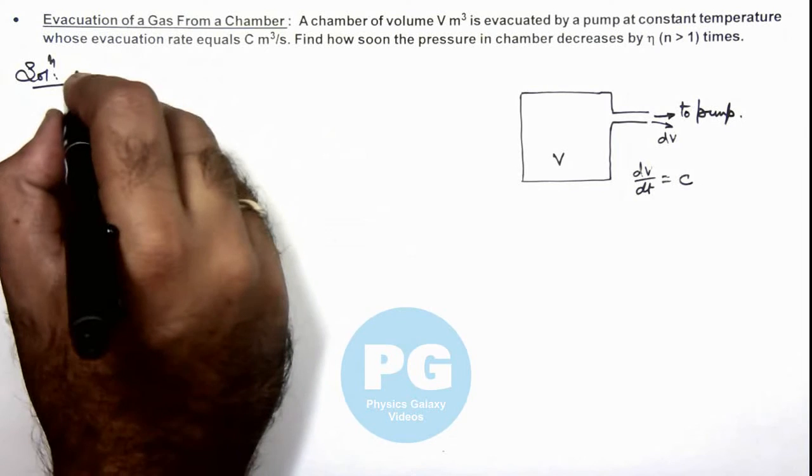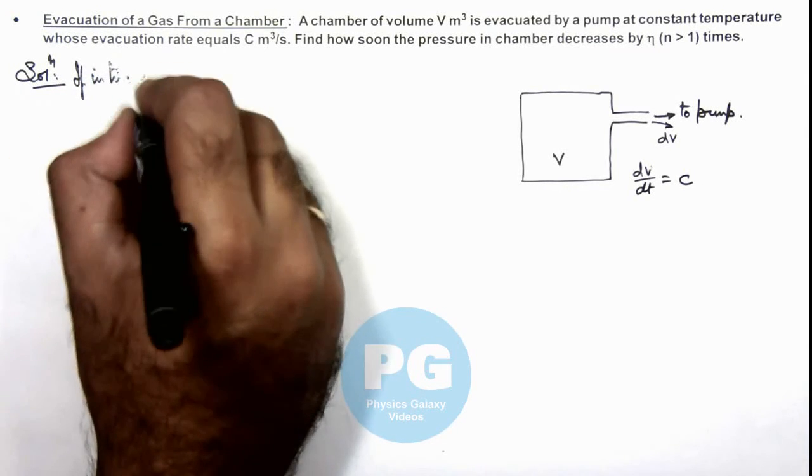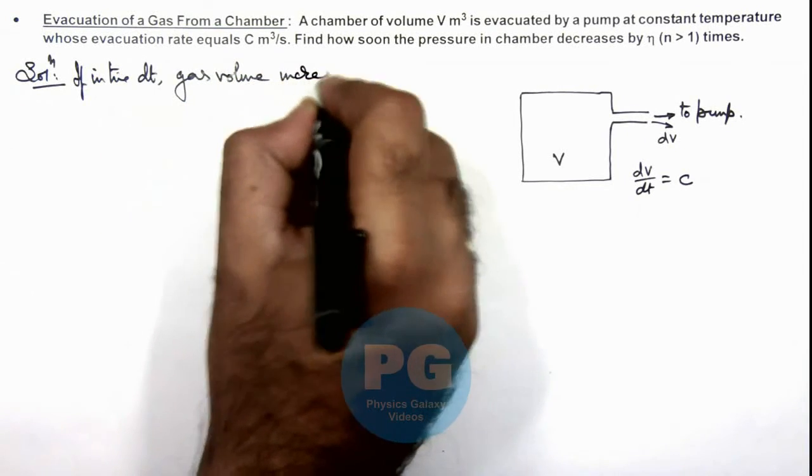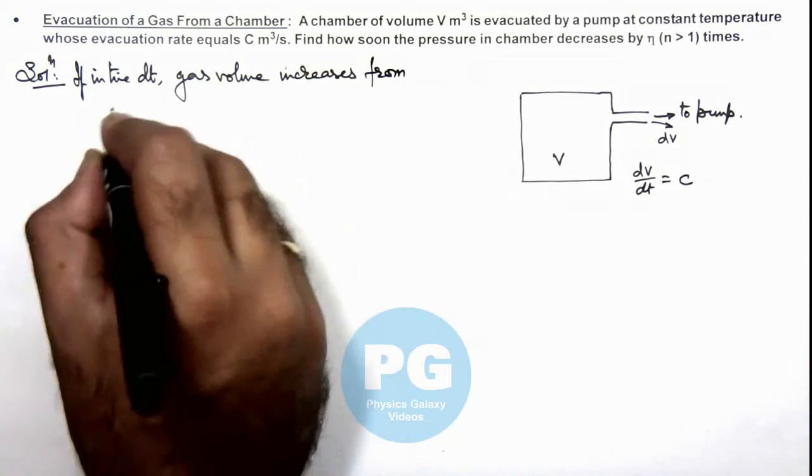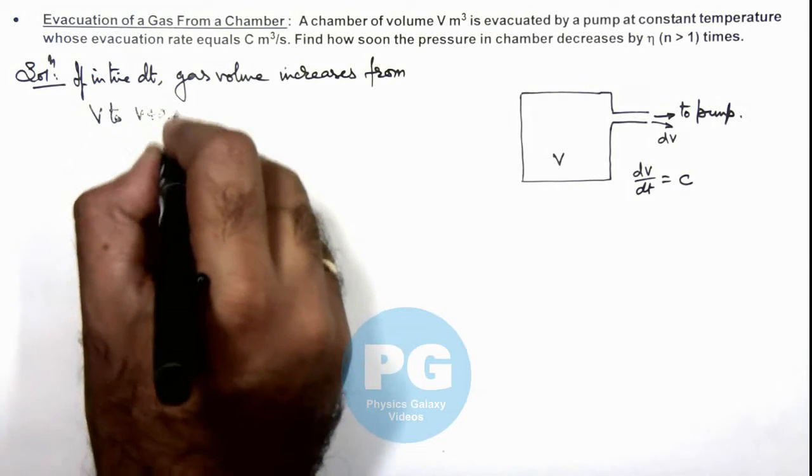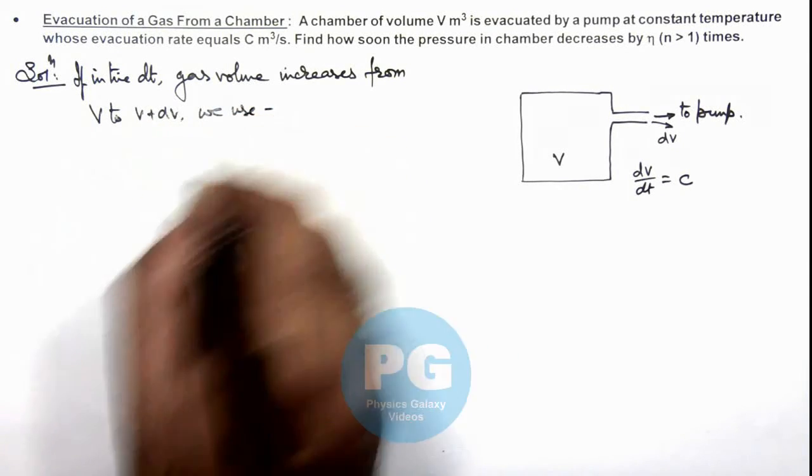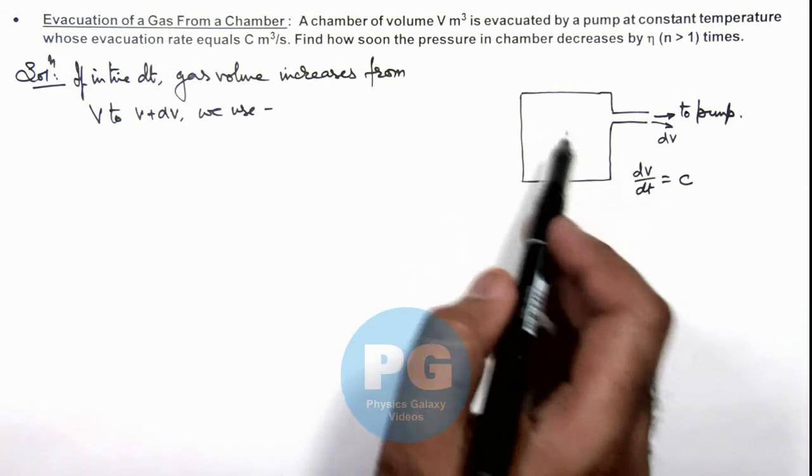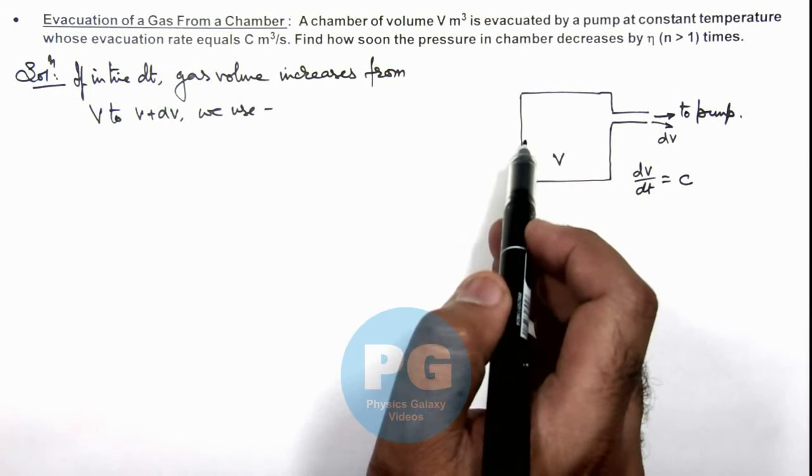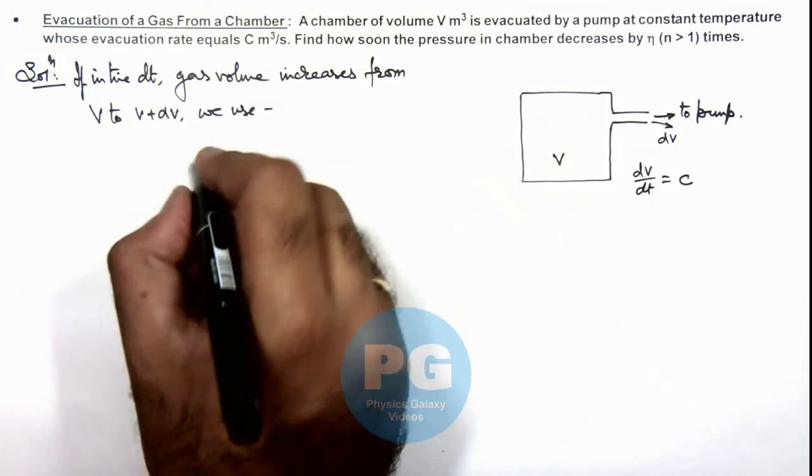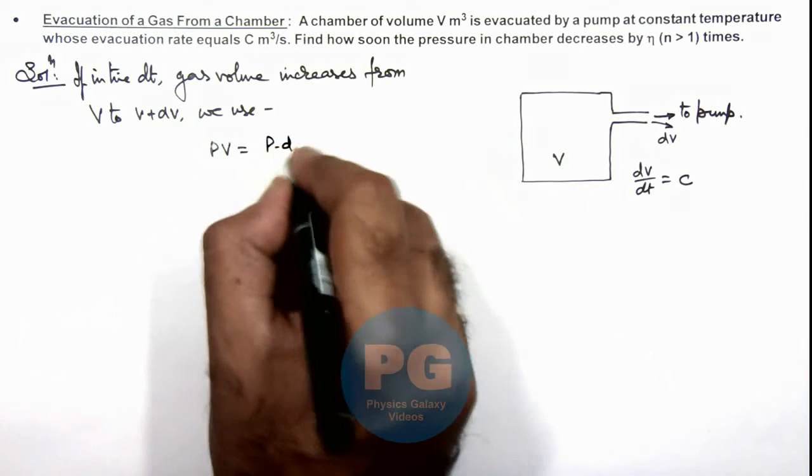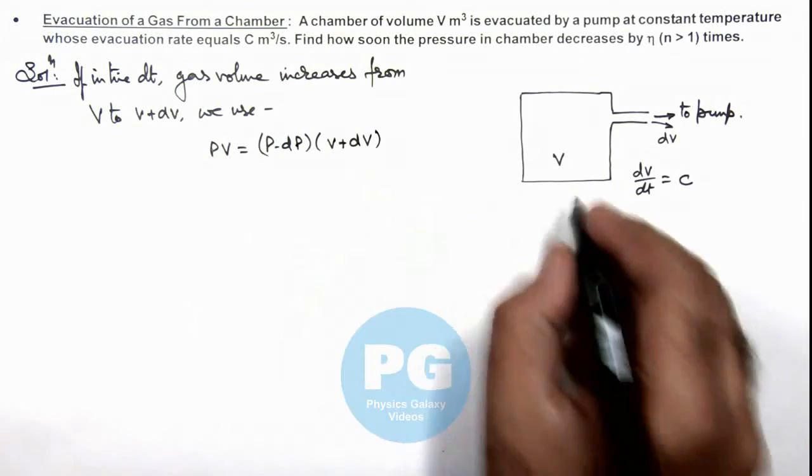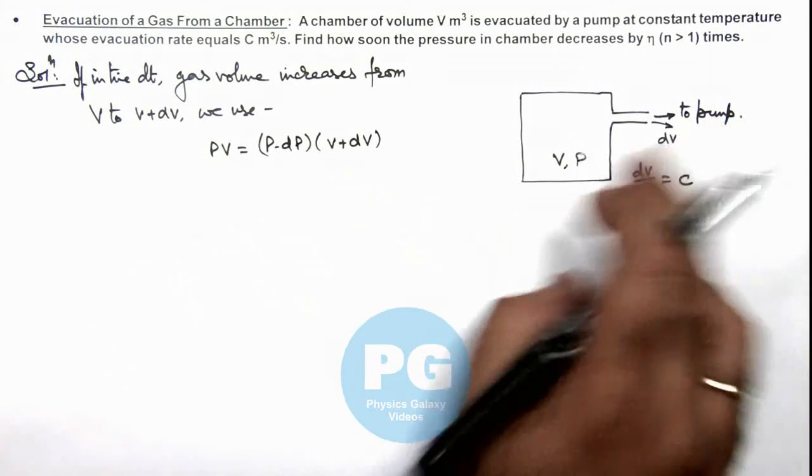So here we can write: if in time dt gas volume increases from V to V + dV, then we use the gas law. We consider the pressure of gas is P. Then on increasing the volume, pressure will decrease to a value P - dP, and since temperature is constant we can write PV = (P - dP)(V + dV). Here we are considering pressure in the chamber is P and on expanding the gas, pressure will decrease.